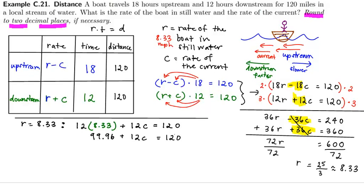Subtracting 99.96 from each side, I get 12c equals 20.04. And therefore c would be 1.67.